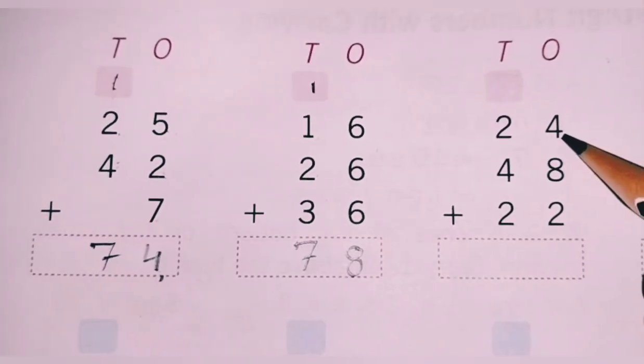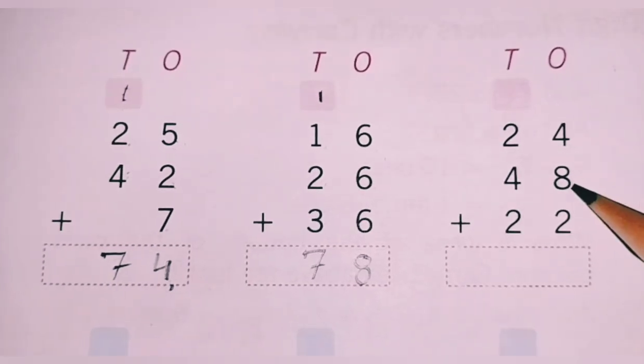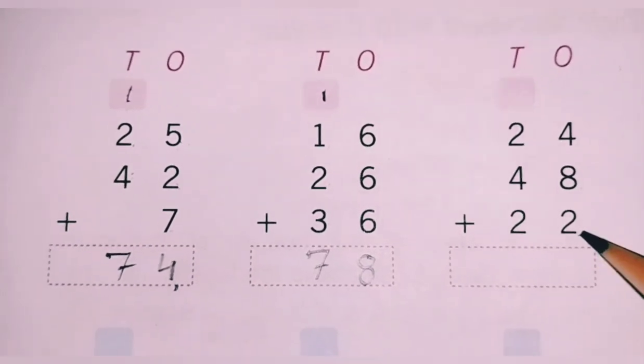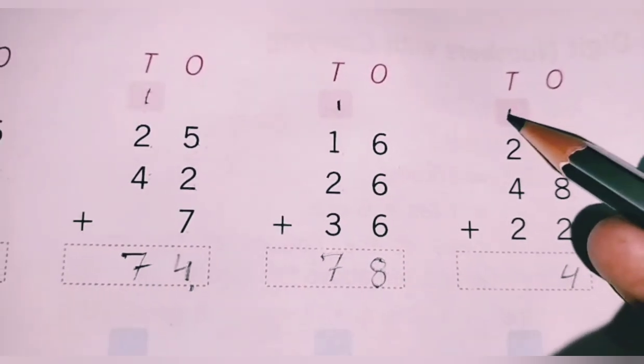Next. Open number 4. Here is 8. 4 plus 8, 12. 12 plus 2, 14. 4 here. 1 carry up.